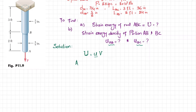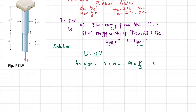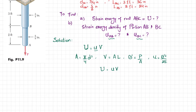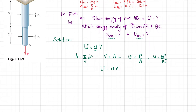The formulas we will use are: area of the circular rod equals pi over 4 times d squared; volume of the rod equals area times length; stress equals load per unit area; strain energy density equals sigma squared over 2E; and total strain energy equals strain energy density times volume. We will organize all data in a table.